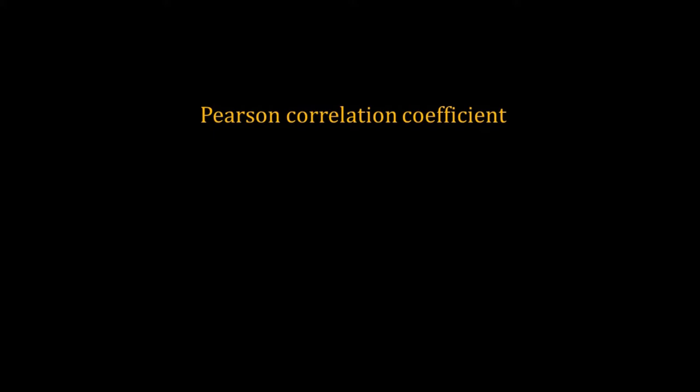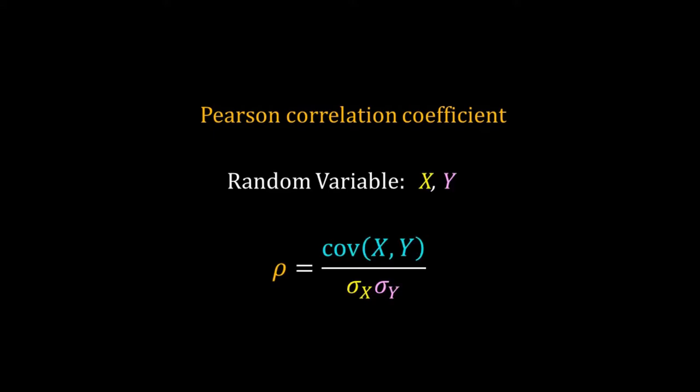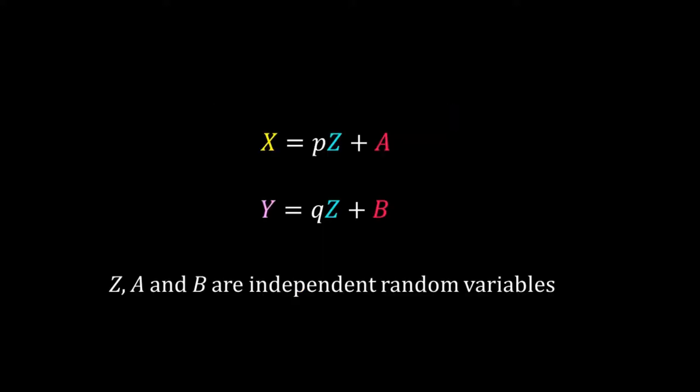Pearson correlation coefficient solves these issues and provides a better measure of linear association between two variables. The Pearson correlation coefficient is the normalized covariance — it equals the covariance of x and y divided by the standard deviations of x and y. The resulting value, rho, is unitless. Let's now check the properties of rho.